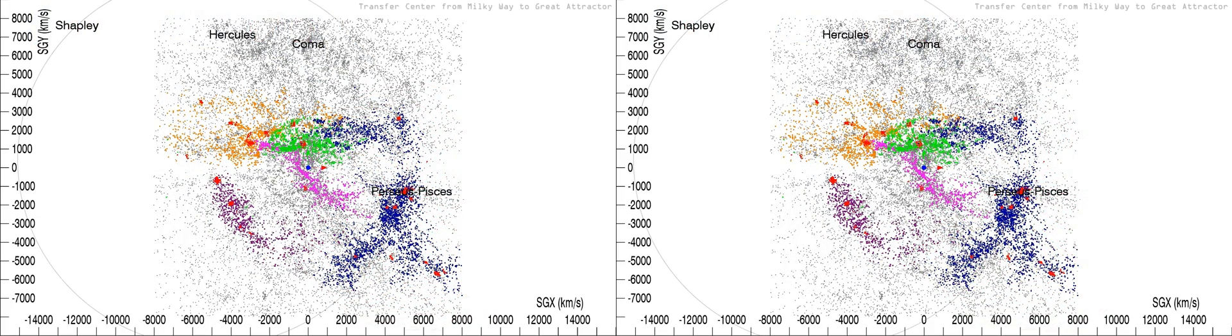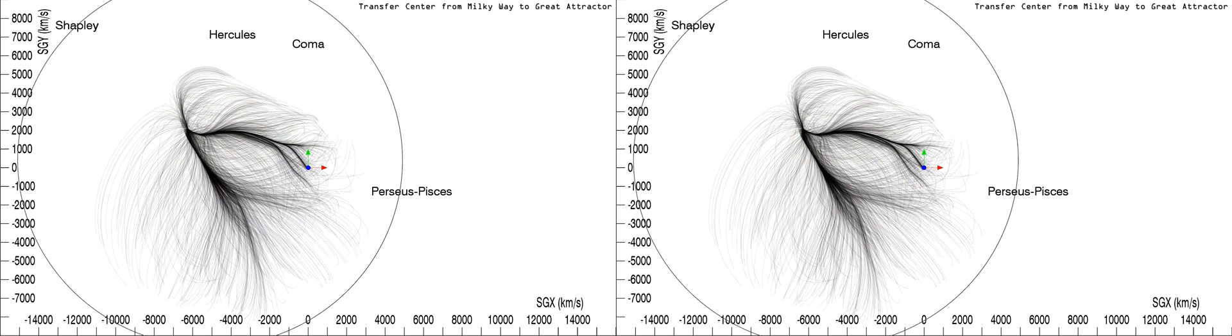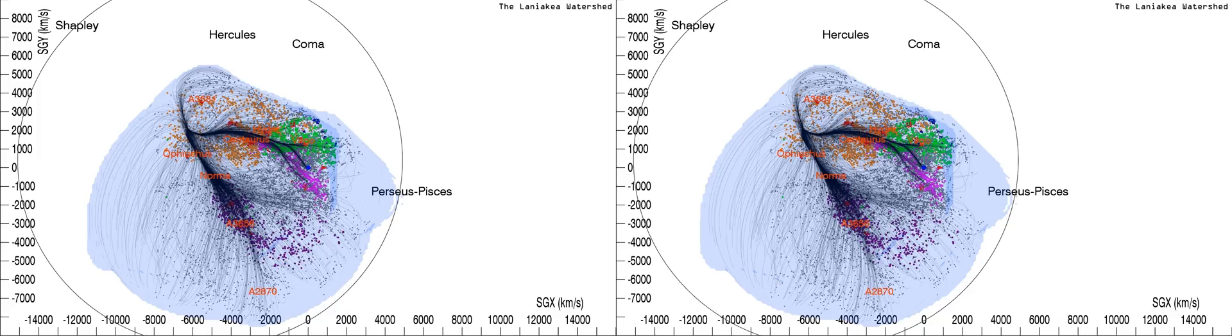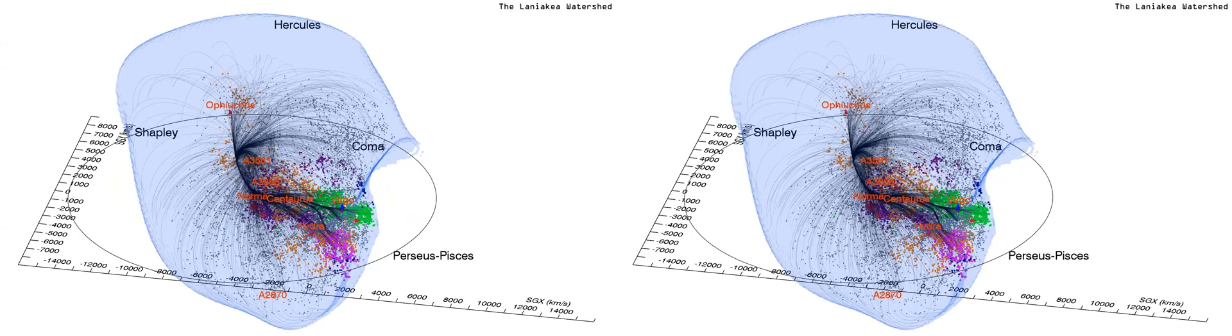We now impose a new center and radius on the Wiener filter density field, and the velocity flow lines are restricted to the watershed of this basin of attraction. Galaxies from the redshift catalogue are again superimposed with colours distinguishing separate major features. A surface encloses the limits of the watershed.